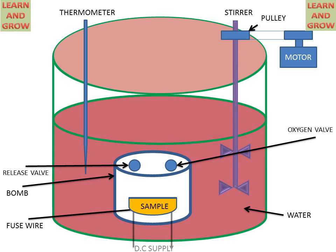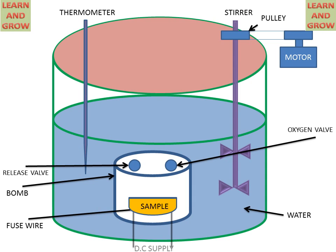This water temperature is noted by the thermometer. The water in the calorimeter is continuously stirred at a moderate rate and temperature readings are noted. When the temperature becomes constant, the electric circuit is closed and fuel gets ignited.